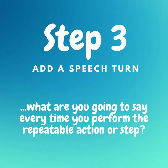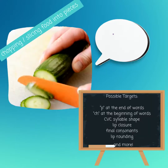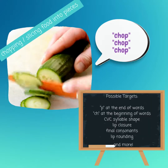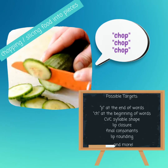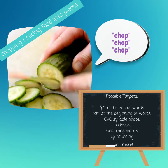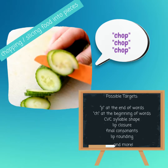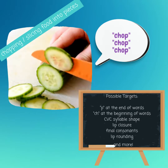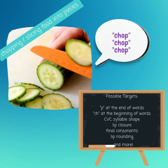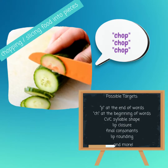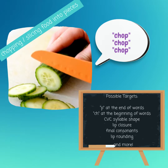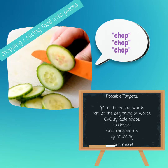Here is where a routine activity that you do with your child becomes speech practice — you add the speech turn. What are you going to say every time you perform that action of the routine? So you might choose the word 'chop' if you're working at word level on P at the end of words, or CH at the beginning of words, or CVC syllable shapes, or lip closure, or final consonants, or lip rounding. One word could work on a whole host of different targets. The target is assigned by your child's SLP, and you can run the words and phrases you're thinking of by them first, then just start using them in your everyday routines.